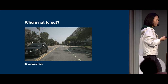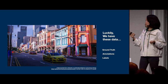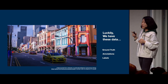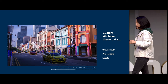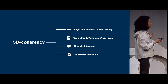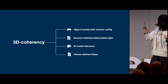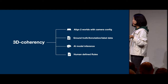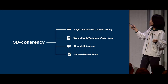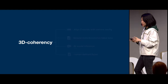This is actually easy to obtain. Most autonomous driving or robotics datasets have this — we call it 3D annotation, which contains information about what objects are in the scene, their position, location, rotation, velocity, and other attributes. To achieve 3D coherency, we first align our tools with the real camera configuration, find ground truth data from the original dataset, use AI model inference in our case, and finally apply human-defined rules to achieve 3D coherency in our hybrid synthetic data generation project.